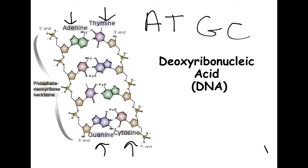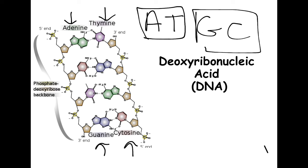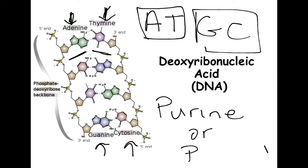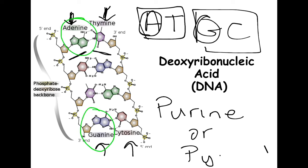In an ideal world where there is no mutation, A traditionally pairs with T, and G pairs with C. DNA bases can either be purines or pyrimidines. Purines include adenine and guanine. That means thymine and cytosine are the pyrimidines. Remember: A pairs with T, and G pairs with C.